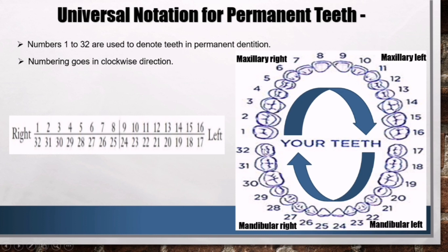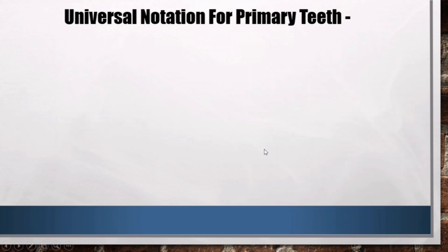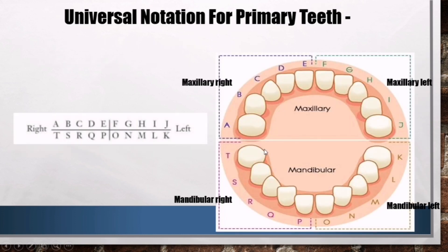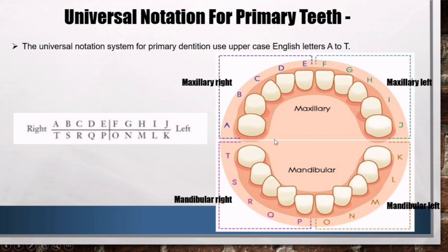Universal Notation for Primary Teeth: the universal notation for primary dentition uses uppercase English letters A to T. Maxillary teeth are designated as alphabets A to J, beginning with the right maxillary second molar. For mandibular teeth, letters K to T are used.